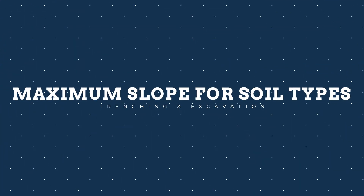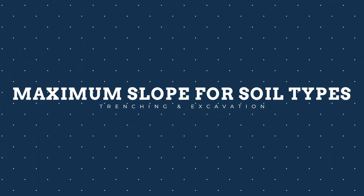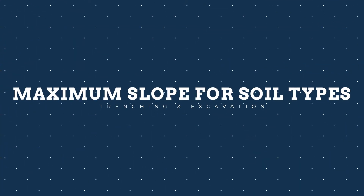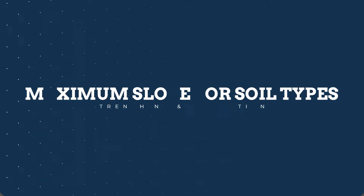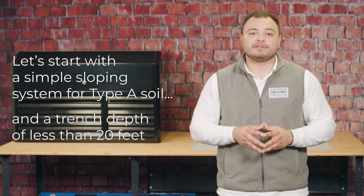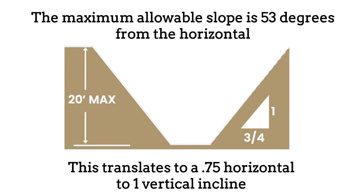Let's start with a simple sloping system for type A soil and a trench depth of less than 20 feet. The maximum allowable slope is 53 degrees from the horizontal. This translates to a 0.75 horizontal to one vertical incline and is shown on the screen now.